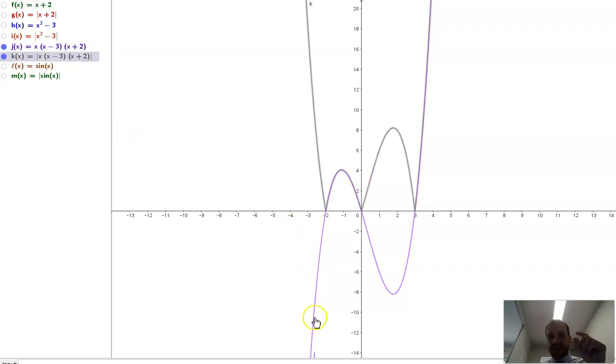Okay. You can see anything that was below the x-axis is now above the x-axis. It's bounced off, and it's been reflected in that x-axis. Bounced off, and it's been reflected in that x-axis.